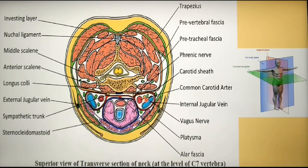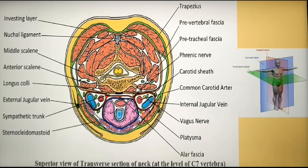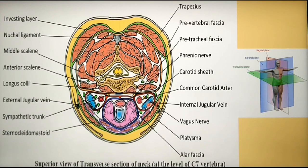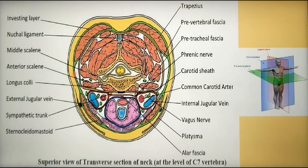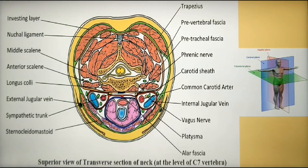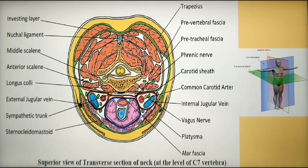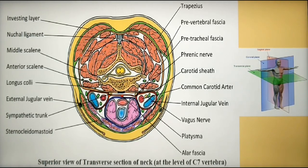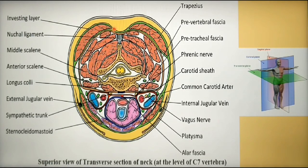The thyroid, trachea and esophagus are enclosed within the second layer of deep cervical fascia, which is the pre-tracheal layer illustrated in blue color. Going further posteriorly, there is the carotid sheath in red on either side, which encloses the common carotid artery, the internal jugular vein, and the vagus nerve. The orange-colored layer is the pre-vertebral fascia, which encloses different groups of muscles around the cervical vertebra.